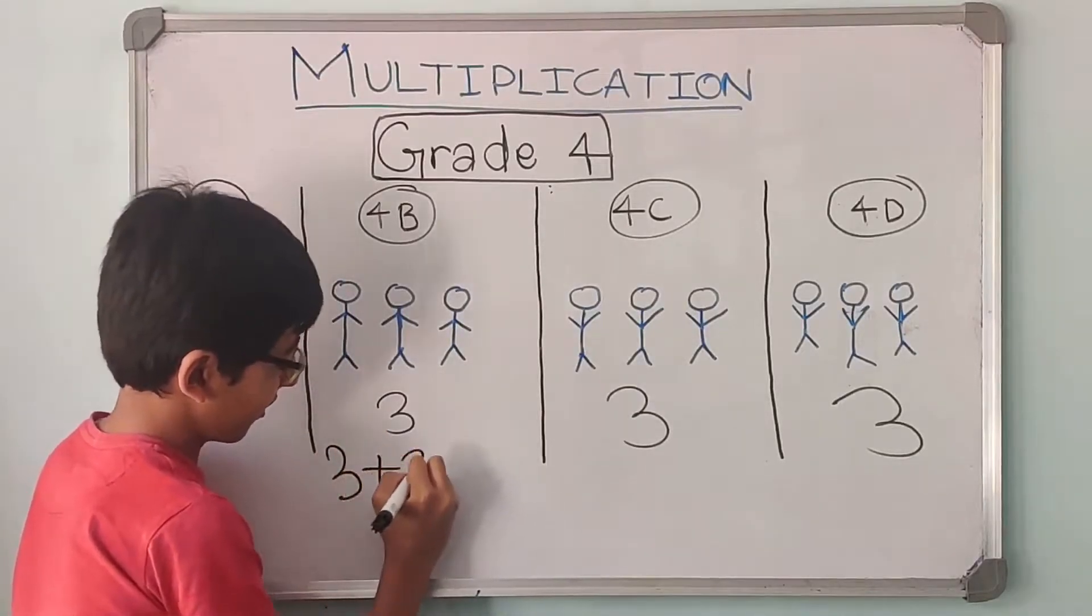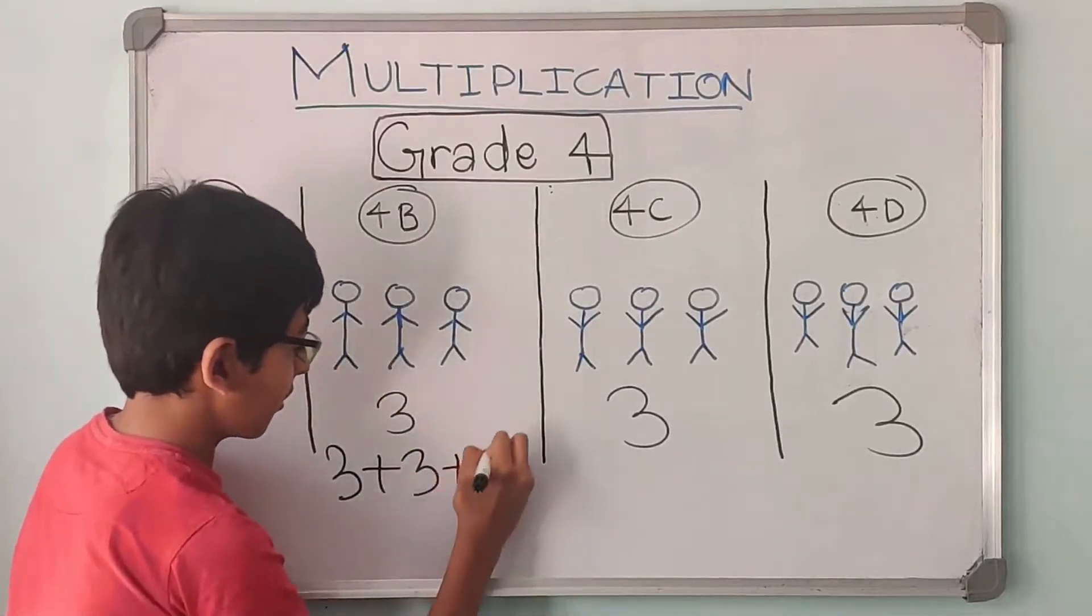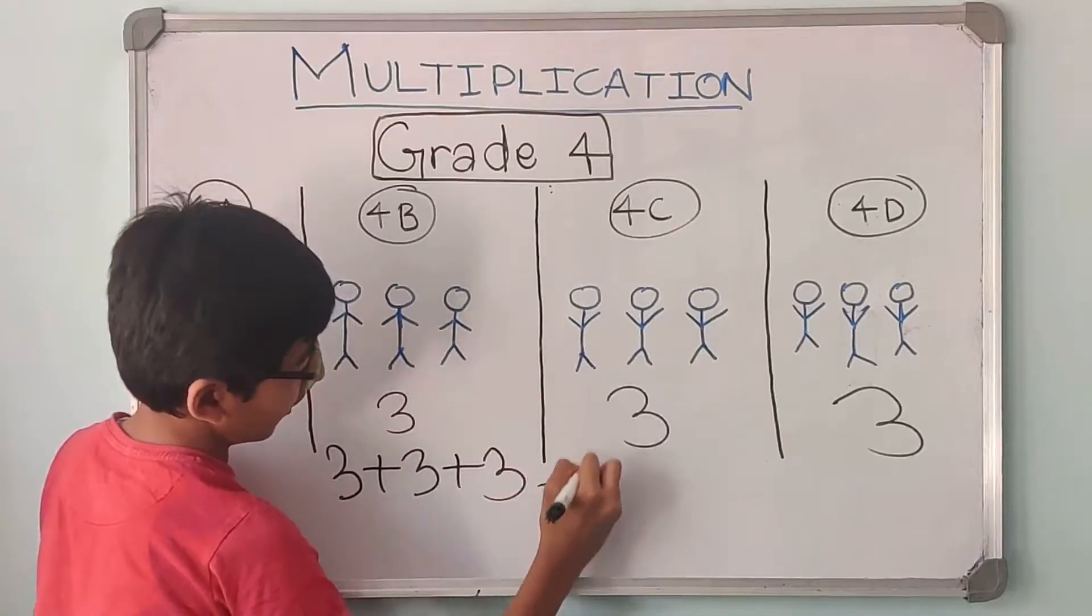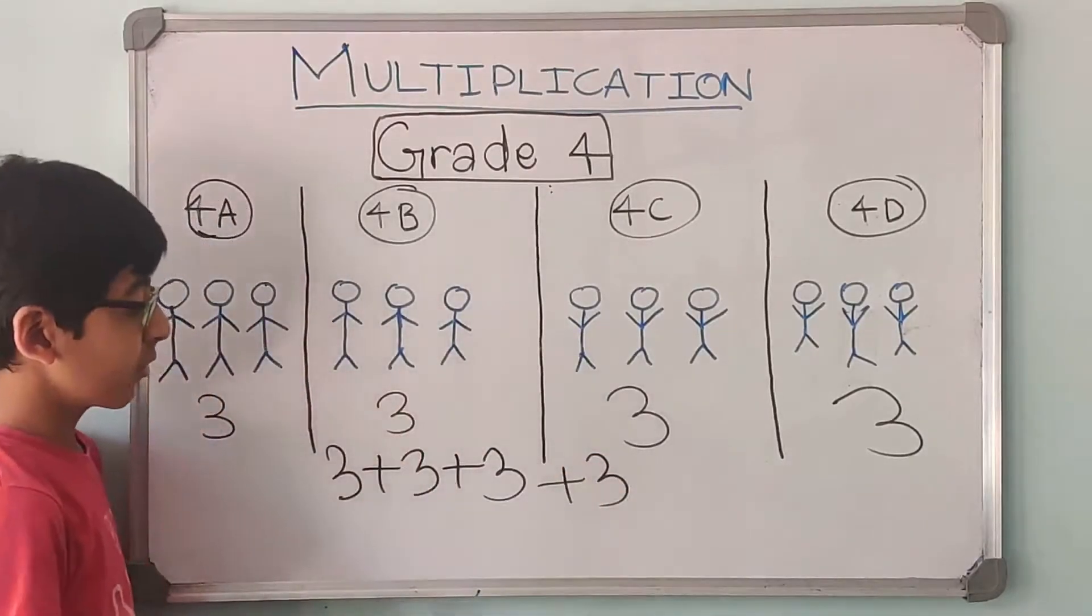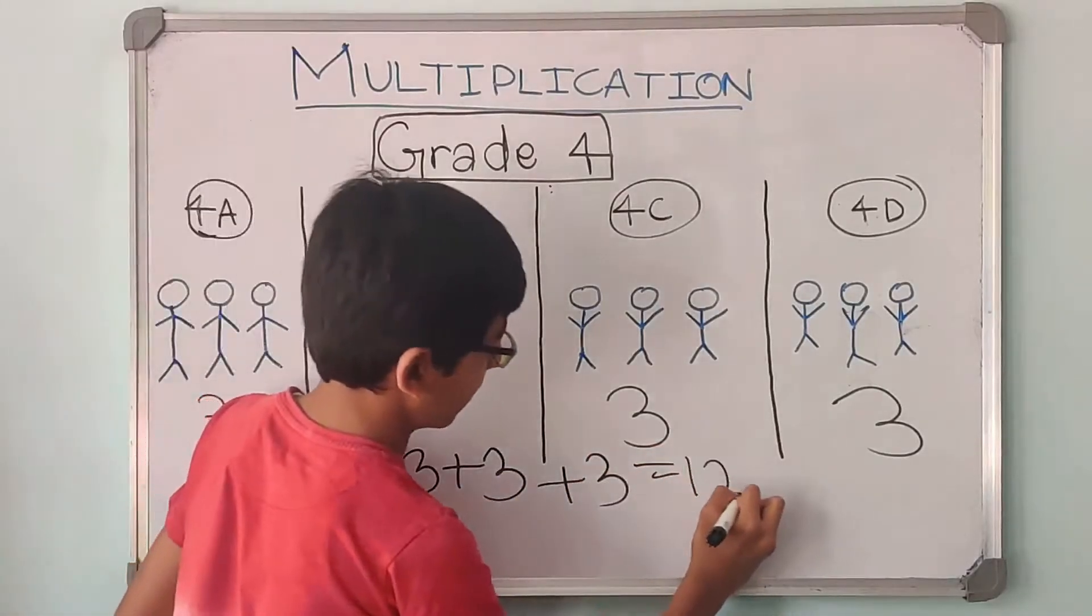What will we do? First we will do 3 plus 3. So that we will get 4A plus 4B. Now like that we will add 4C also. Then we will add 4D also. You can see over here we are adding 3 four times. 3 plus 3, 6 plus 3, 9 plus 3, 12.